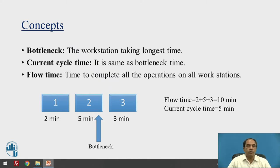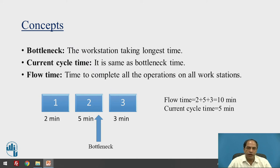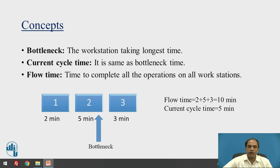Replacing the word 'machine' with 'workstation' lets us apply line balancing in a broader sense. The workstation that takes the longest time is called the bottleneck, and the bottleneck decides the entire output of that particular line. The current cycle time is the same as the bottleneck time. The flow time is the time to complete all operations on all workstations. In this example, the flow time equals 2 plus 5 plus 3, totaling 10 minutes. The current cycle time is 5 minutes, which is the bottleneck machine's time.